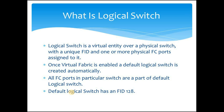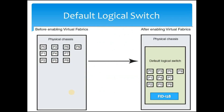Let's understand the default logical switch using a diagram. Before enabling virtual fabrics, we have a physical chassis with eight ports. As soon as you enable virtual fabrics, a default logical switch is created with FID 128, and all ports which were part of the physical chassis become part of that default logical switch.